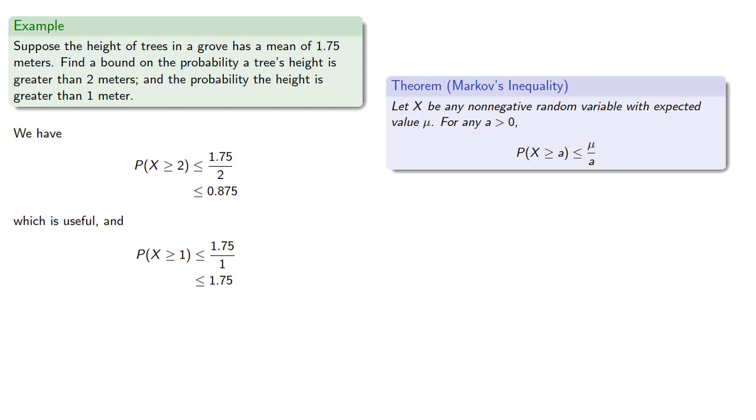And that's not quite as useful because we know that any probability has to be less than or equal to 1. So to know that the probability is less than or equal to 1.75 isn't actually very useful.